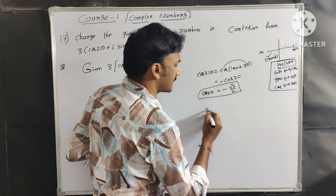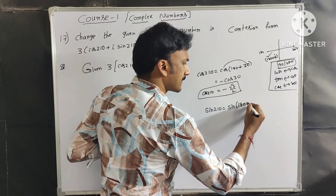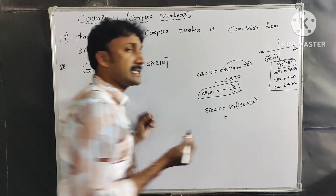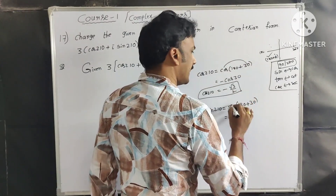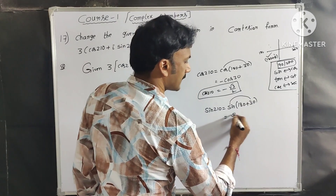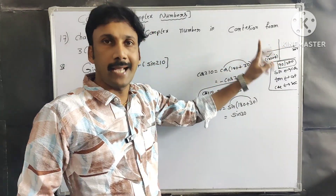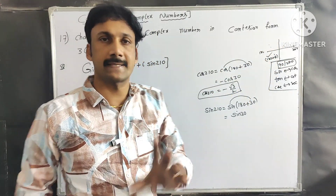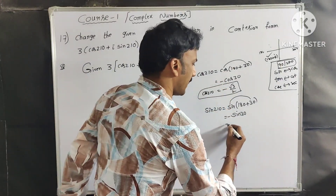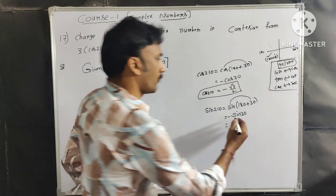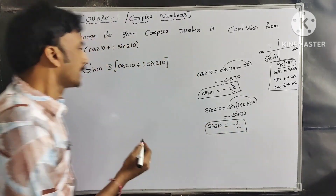Now we calculate sin210°. sin210° = sin(180° + 30°). In the third quadrant, sine is also negative. Sin30° = 1/2, therefore sin210° = −1/2.